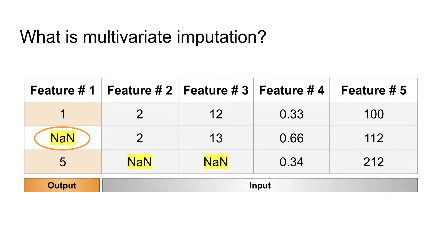However, in multivariate imputation the method is slightly different. Here each column is considered as an output column. For example, if we have five feature columns in the dataset and the first three features have missing values, the imputation works differently than in the univariate case.